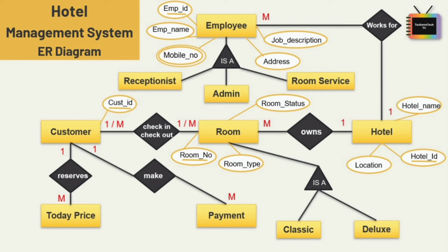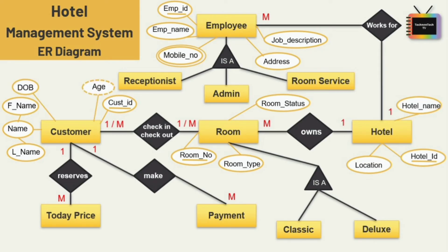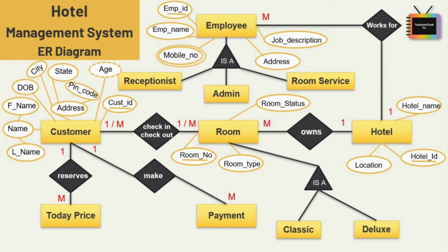For the entity customer, the first attribute is customer ID, which is the key attribute. The second attribute is name — here I am using a composite attribute, breaking down the name attribute into two sub-attributes: first name and last name. Next is date of birth. User age is a derived attribute, as it changes over time and can be derived from date of birth. The address attribute is also composite, composed of pin code, state, and city. We have used a multi-valued attribute for mobile number.